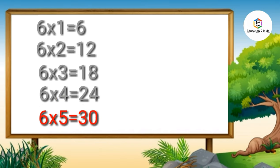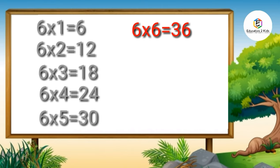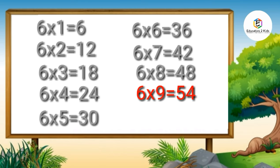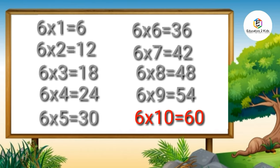Six fives are thirty. Six sixes are thirty-six. Six sevens are forty-two. Six eights are forty-eight. Six nines are fifty-four. Six tens are sixty.